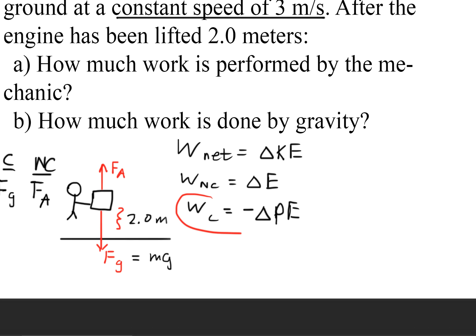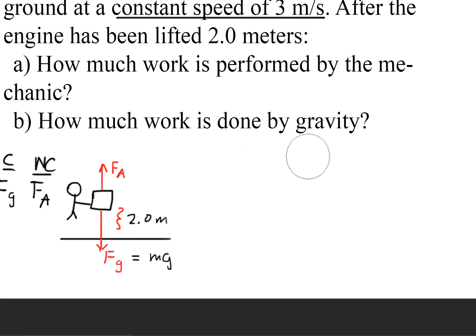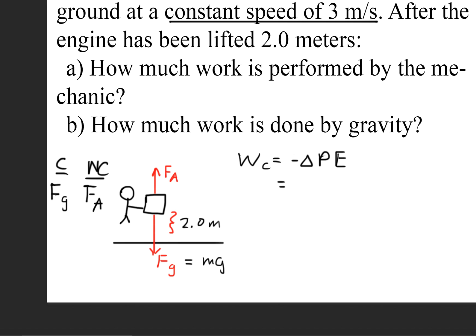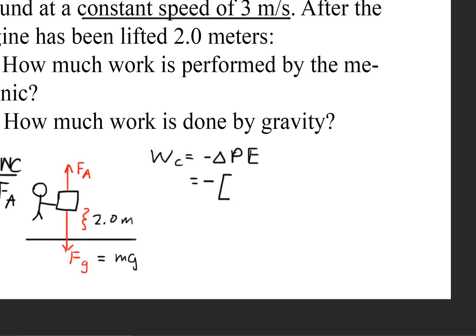If we focus our attention on this work-energy theorem, solving this question is not too difficult. The only conservative force we have in the system is gravity, and the question is how much work is being done by gravity — so this is the optimal equation to use. If we write everything out and put the negative out front, bracketing to isolate the negative sign, we have our MGH final minus our MGH initial.